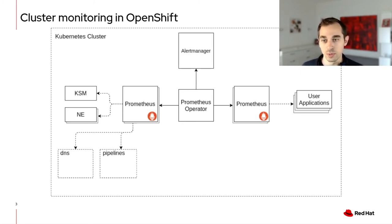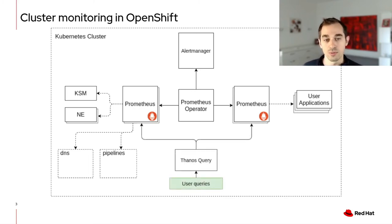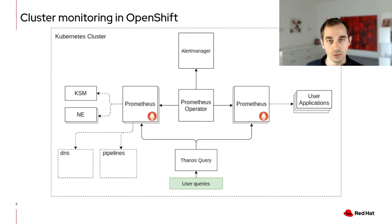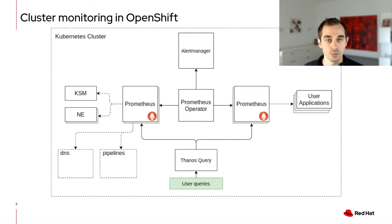For routing alerts, we deploy AlertManager, again through the operator. An extremely important component for us is the Thanos query, which serves two functions. One, it provides a single query endpoint to users, essentially serving as an API for the monitoring stack — users don't have to think about which Prometheus to query for which metric, they simply use a single endpoint. Two, the query can join metrics across Prometheus instances, which means users can issue queries that have metrics both from the platform and from their applications.